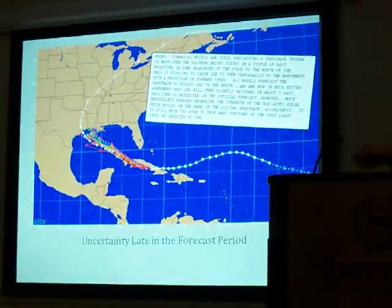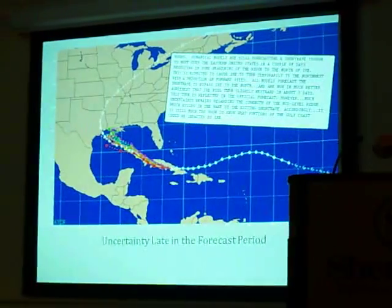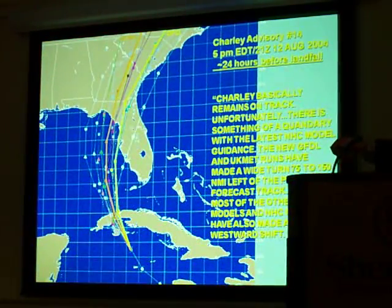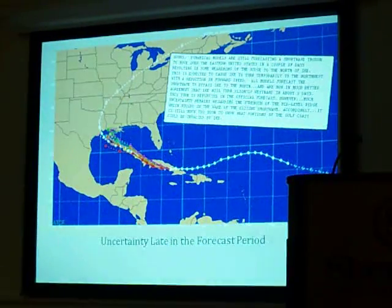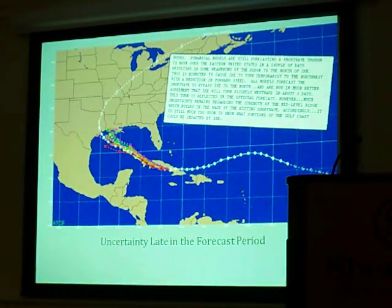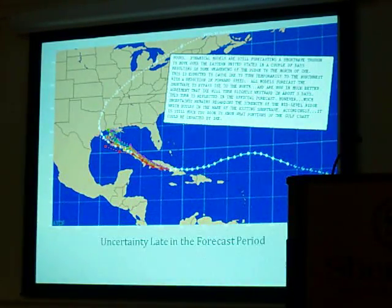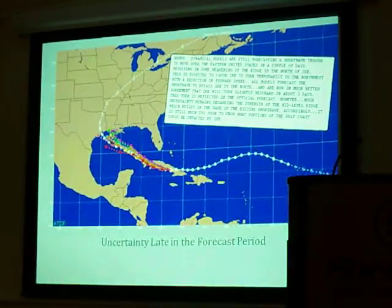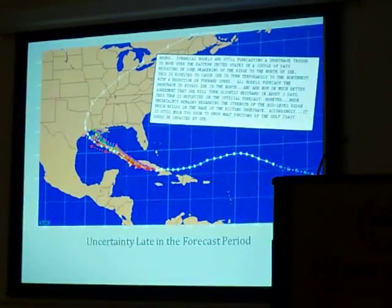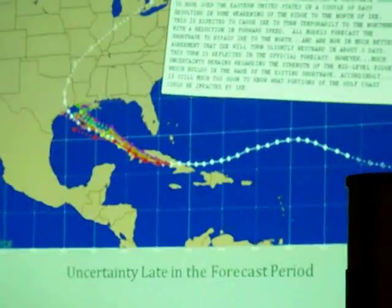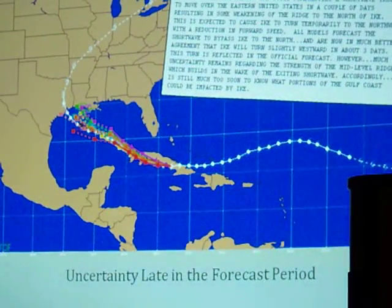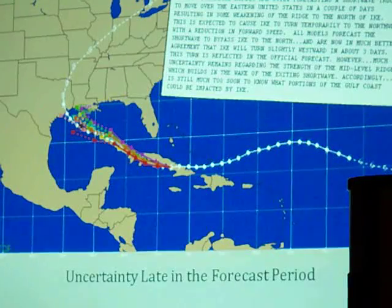Here's a series of forecasts and associated guidance during Hurricane Ike. I want you to see how the model guidance — this is the guidance we had in real time — flip-flops and goes all over the place. In general, if we follow our philosophy of not making radical changes and making changes over small increments, how that pays off in the end.